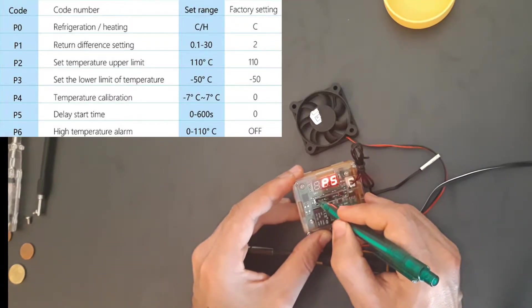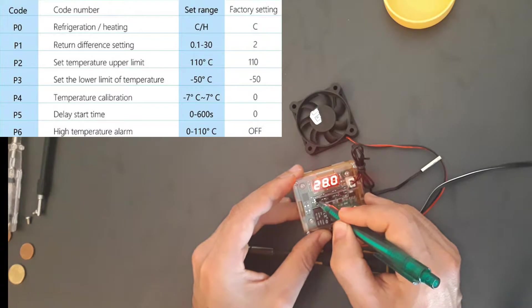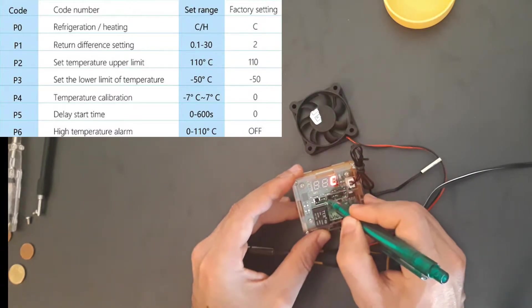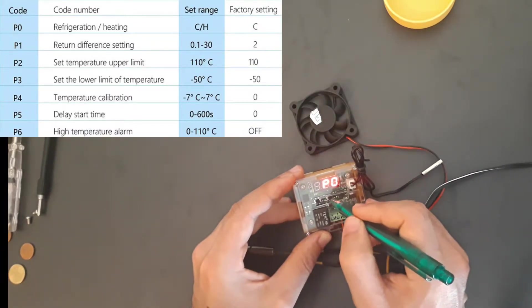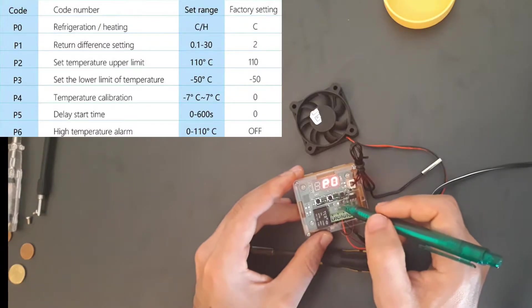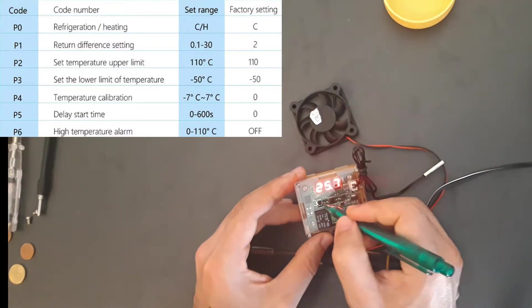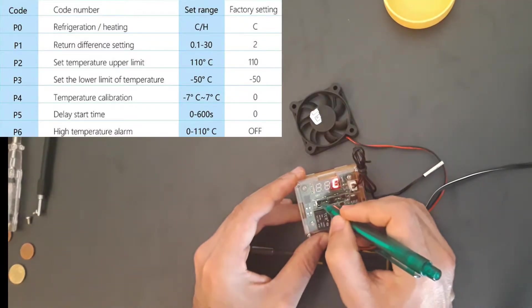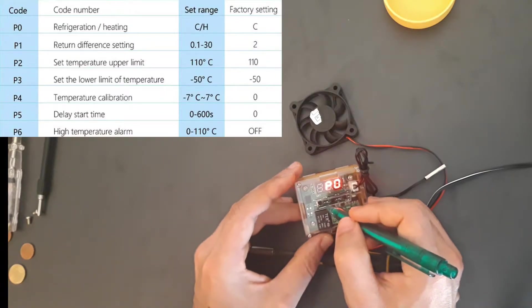P5 is a delay start. P5 is, for example, okay reach 30 degrees, I don't want you to start immediately, I want you to start after two minutes. And you can set this here. The maximum value is 600 seconds, I think.